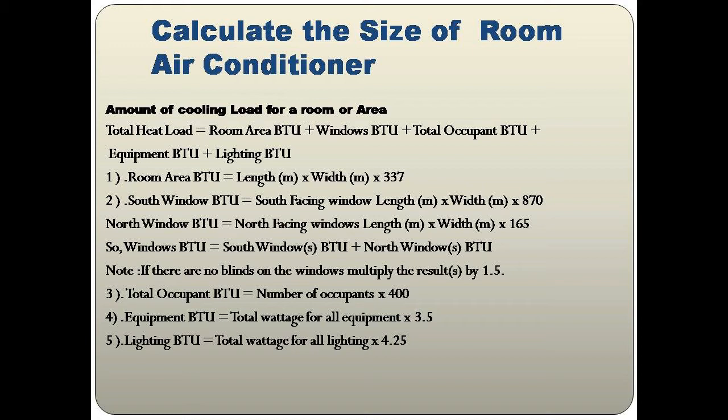For Windows BTU, there are two types: south-facing and north-facing windows, each with a different calculation. For a south-facing window: length × width × 870. For a north-facing window: length × width × 165. Total Windows BTU = South Windows BTU + North Windows BTU. If there are no blinds on the windows, multiply the total windows BTU by 1.5. If there is no window in your room, you can skip this step.